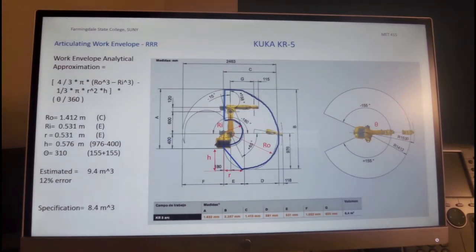Now, a more complicated situation is a work envelope of an articulating robot, sometimes referred to as RRR, which is revolute for the yaw, revolute for the pitch of the arm and the other arm, two arms. And we're looking at the actually envelope of the tool center point, which is at this point.